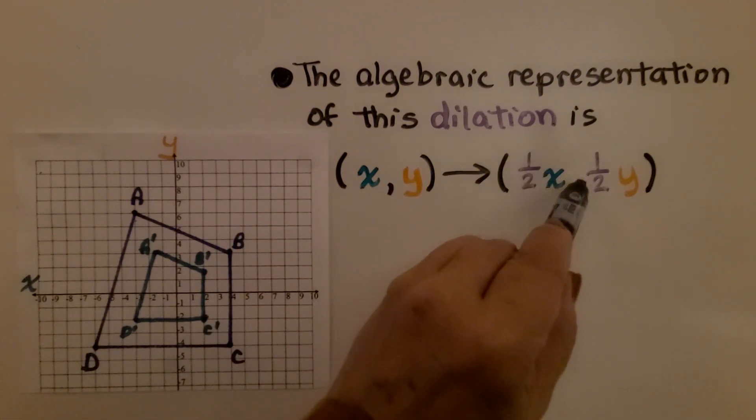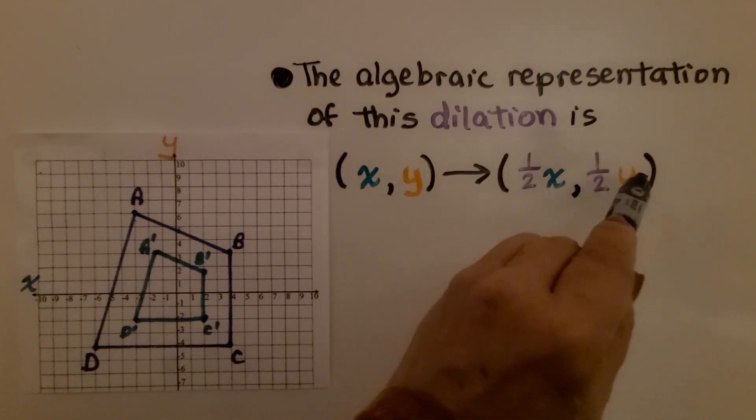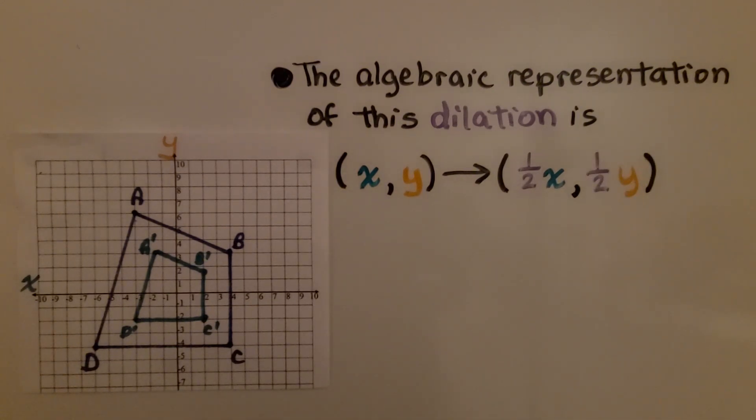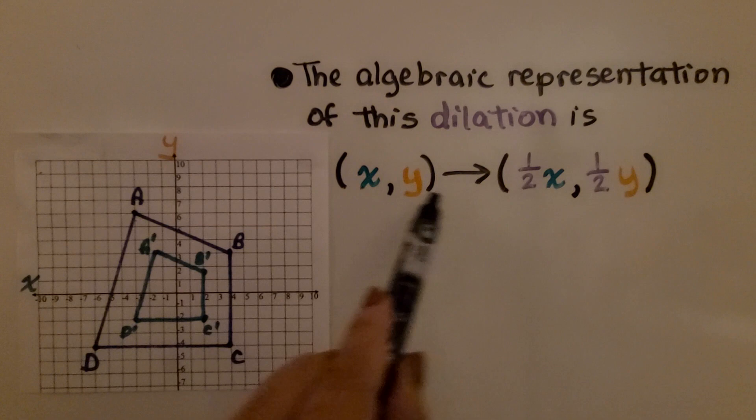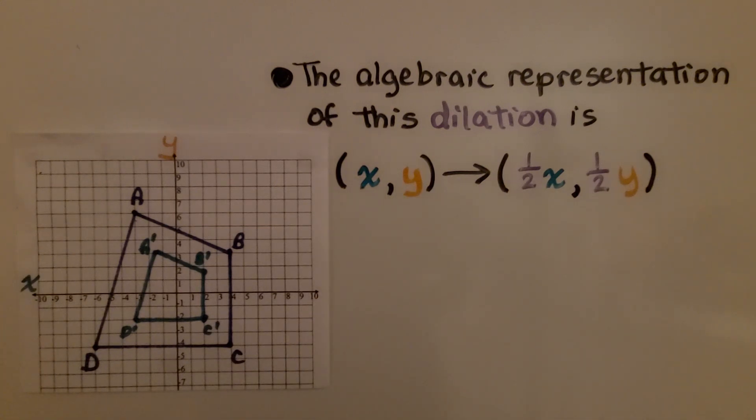Then our x value, comma, the k factor again, and then our y value, close parentheses. That would be how you would write this dilation algebraically.